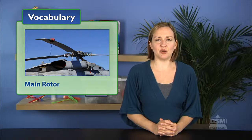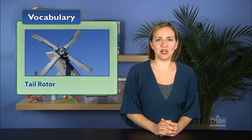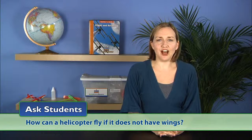Further explain that the main rotor is the large propeller-like object above the fuselage. The main rotor can have from two to four blades. The tail rotor is the smaller propeller at the tail. Ask students, How can a helicopter fly if it does not have wings? Some students may say that the main rotor lifts the helicopter into the air.